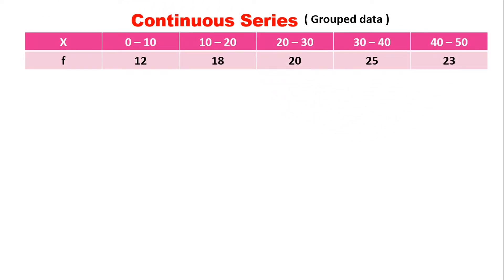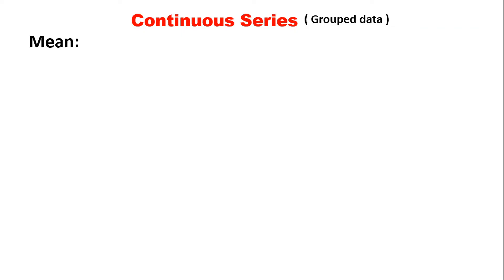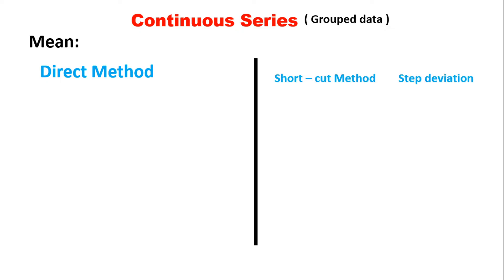Grouped data are continuous series. For example, 20 to 30 — so 20 members. In grouped data, 20 to 30 represents a range of values, unlike ungrouped data where 20 is just 20. So grouped data values are being solved using these methods.